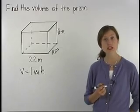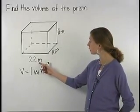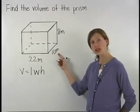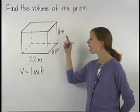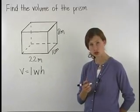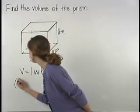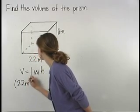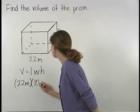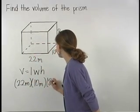Here, notice that our prism has a length of 22 meters, a width of 10 meters, and a height of 8 meters. So we have 22 meters times 10 meters times 8 meters.